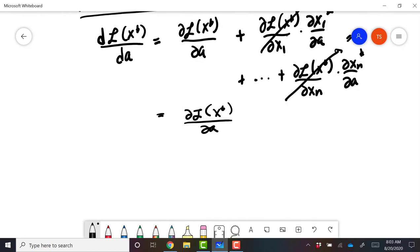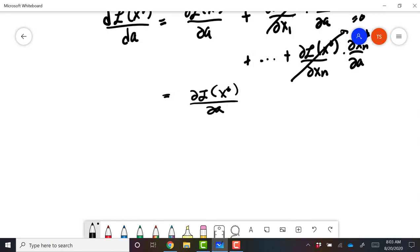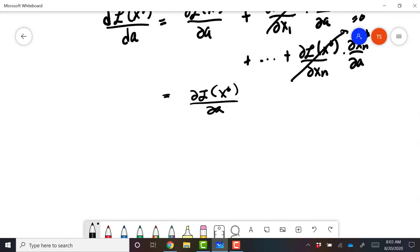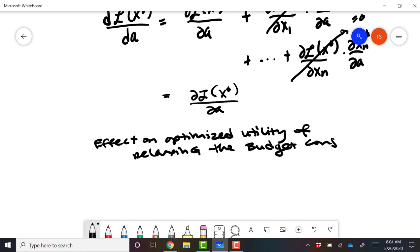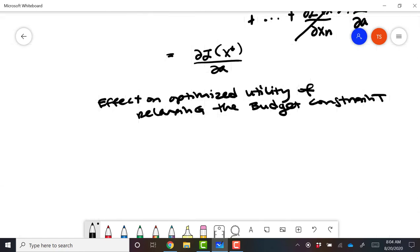So this means, for example, that if we want to know the effect on utility, the effect on optimal or optimized utility of relaxing the budget constraint, then that's asking what is d Lagrangian of x star d W. And we just take a direct partial, and that gives us lambda star greater than zero.